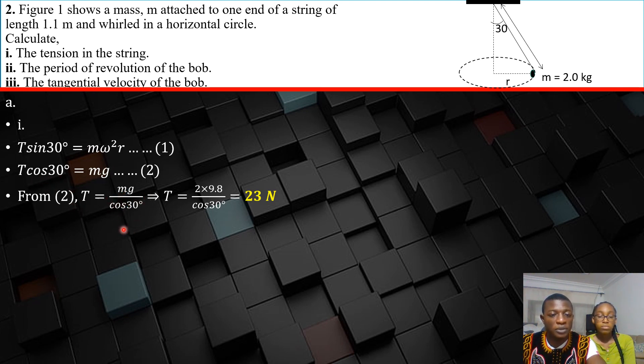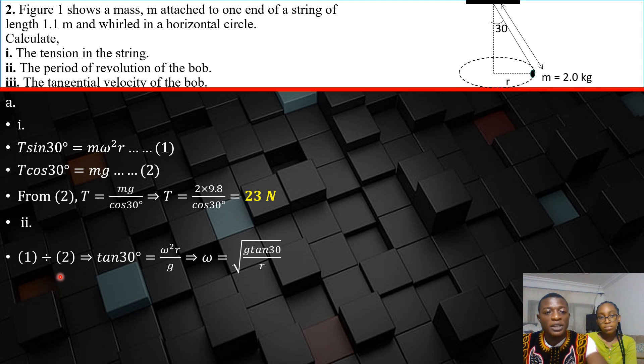You notice that m cancels with m, so T will be mg over cos 30, which means T is 23 newtons. That's easy to get. Over to part 2, which is the period of revolution of the bob. To get the period of revolution, we can ratio equation 1 to equation 2.